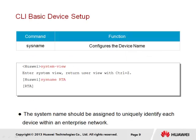An enterprise network is likely to have multiple devices, possibly of the same type, making it increasingly difficult to identify one device from another. We need to specify the system name for each device to uniquely identify them. This is done through the sysname command. We transition from the user view into the system view using the system-view command, and from there we can specify the system name using sysname — in this case changing the name from Huawei to RTA.